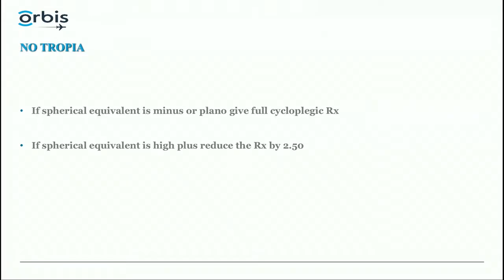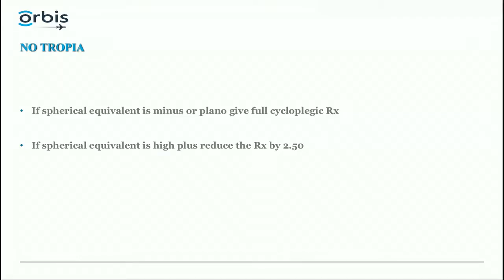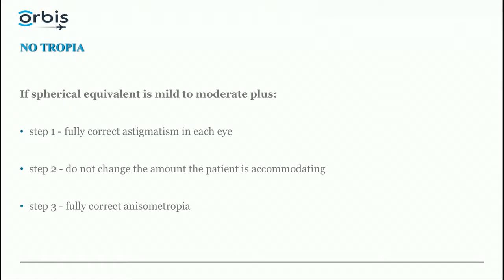In cases of no manifest strabismus — meaning straight eyes, esophoria, or exophoria — we consider the eyes straight. If the spherical equivalent is minus or plano, give the full cycloplegic refraction. If the spherical equivalent is high plus but the eyes are straight, they don't need the full plus, so I reduce the amount by plus 2.50.